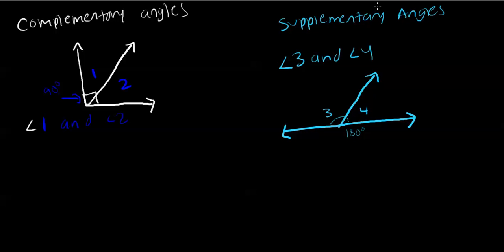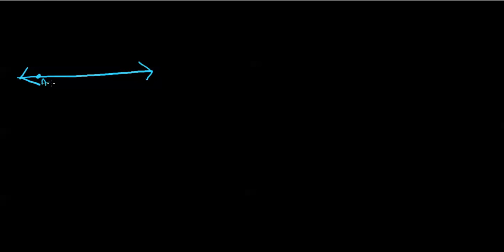Now we're going to look at the linear pair postulate. A linear pair is a pair of adjacent angles whose non-common sides are opposite rays. The angles of a linear pair form a straight angle. If two angles form a linear pair, then they are supplementary. Here you can see that angle ABD and angle CBD are supplementary angles because when we add them together, they form 180 degrees.